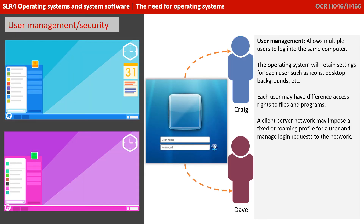Modern operating systems allow for more than one user to log in to a single computer, and when they do, they have their own preferences and settings. Here in the illustration we see the settings for one user — they've got a blue theme — and when another user logs on, you can see they've got a purple theme. Each user may also have different access rights to files and programs. In a client-server situation such as a school network, the network may impose a fixed or roaming profile for users and manage login requests. A fixed profile ensures every user has the same desktop and settings, while roaming profiles allow users to customise their settings, and when they log into different computers, those settings follow them.